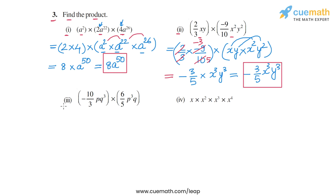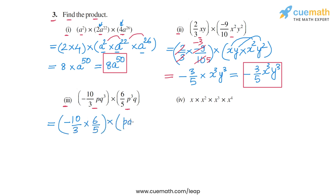Now coming to part 3. In part 3, we have to multiply (−10/3)pq³ × (6/5)p³q. Once again we will multiply the coefficients separately and the algebraic factors separately. The coefficients are −10/3 and 6/5. So 6 ÷ 3 = 2 and −10 ÷ 5 = −2, giving −2 × −2 = −4 as the coefficient of the product.